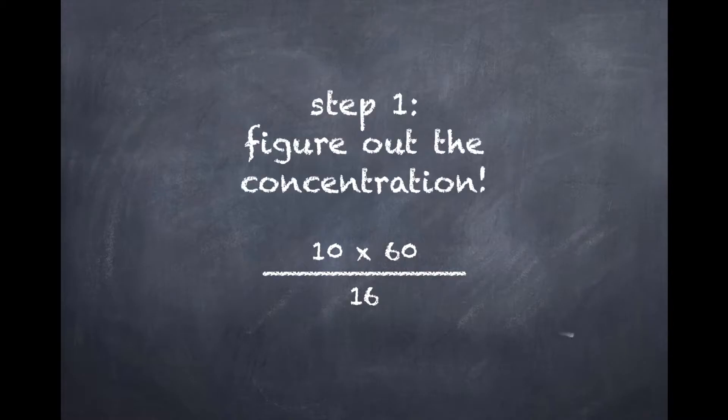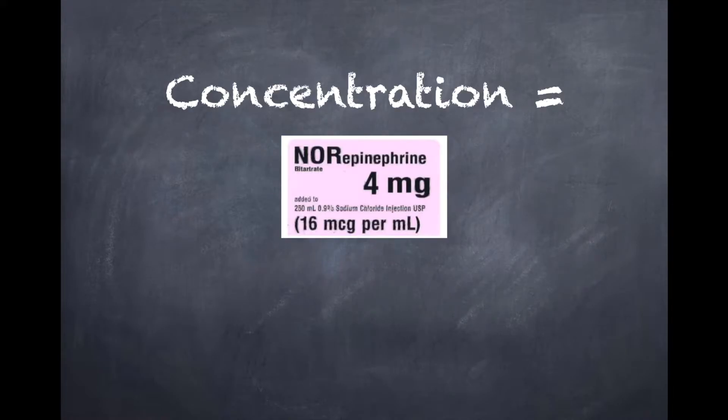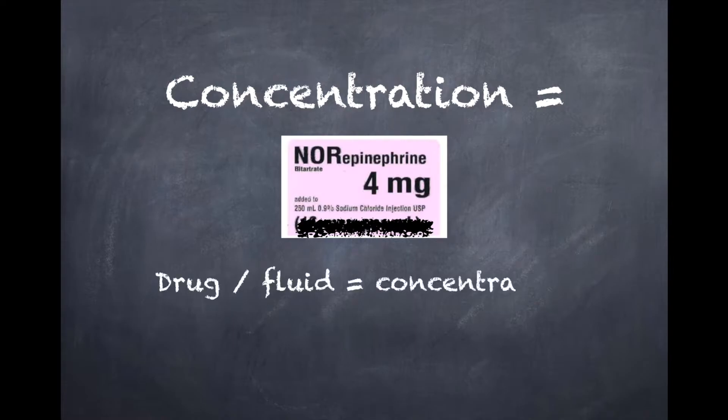So the first thing we have to do is figure out our concentration. So I'm going to use norepinephrine as an example here. And again, you might have labels that just tell you the concentration, that's great if it's pre-mixed, but if you have to make your own, you might be in a situation like this where you're taking some milligrams and putting it into fluid. And so all you do is divide your drug by your fluid, and that will give you your concentration.